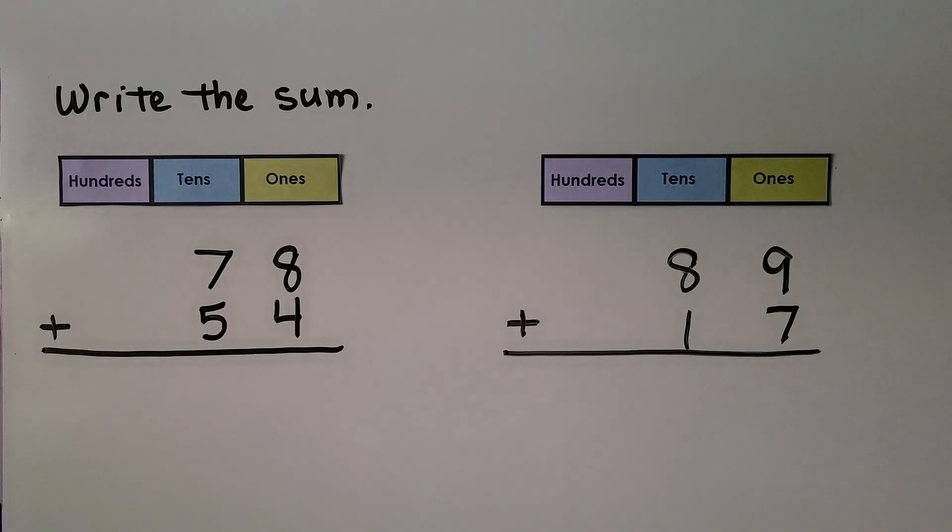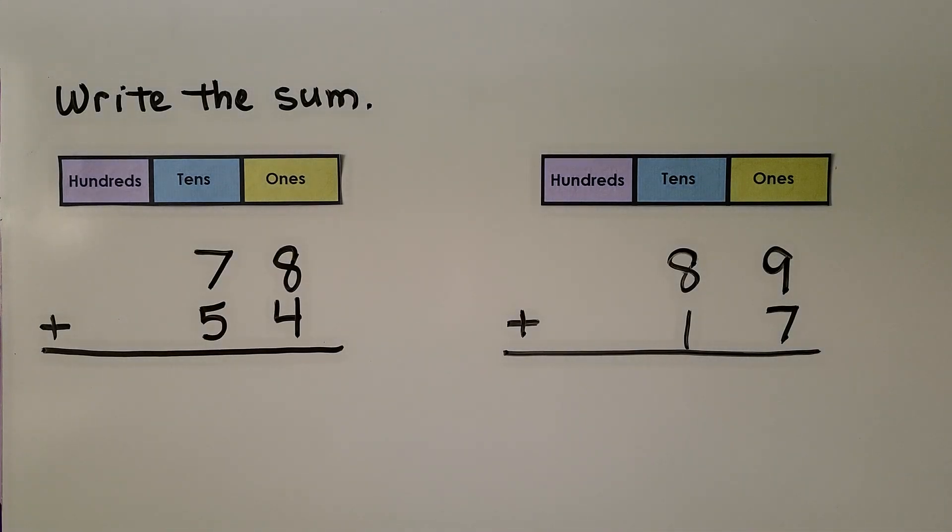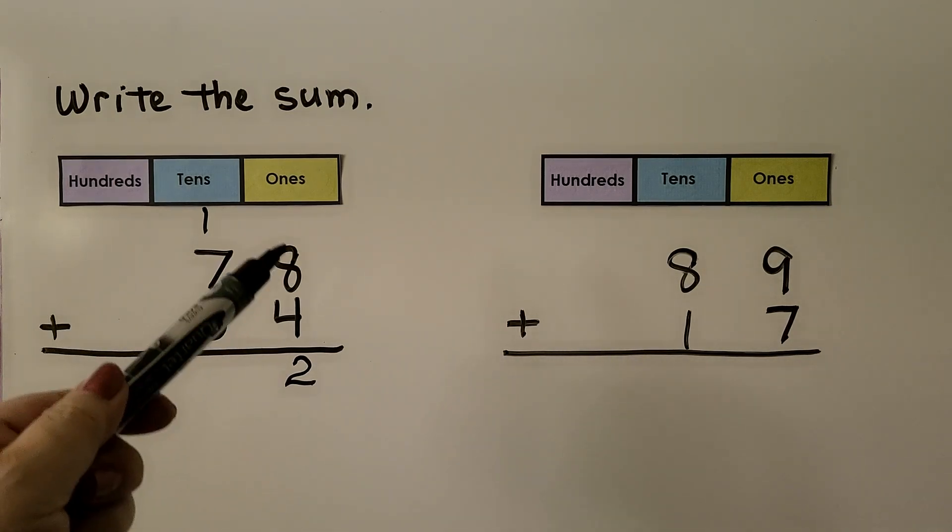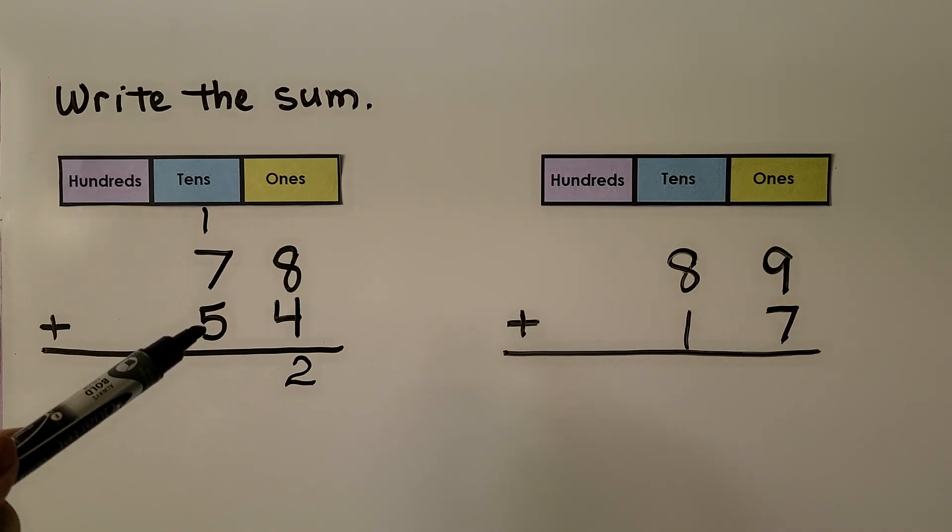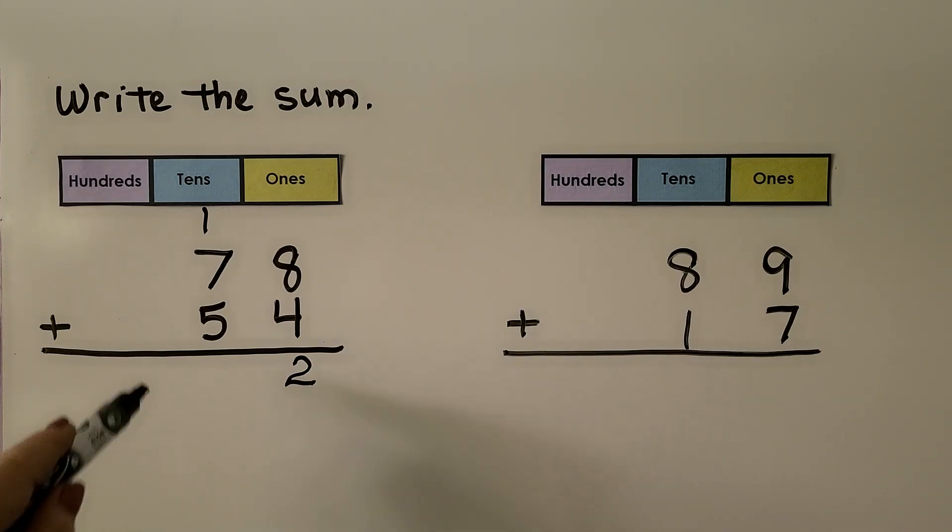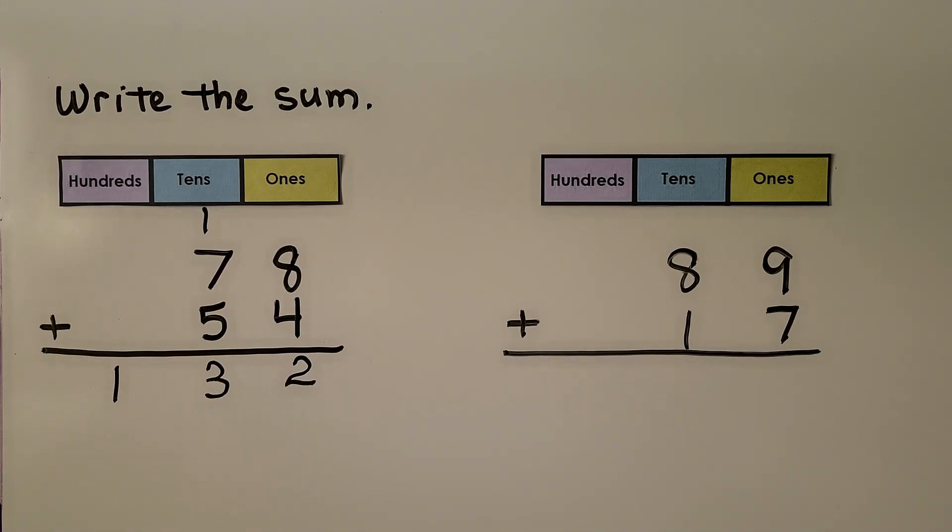It's telling us to write the sum, so we need to add these numbers. We have 78 + 54. We start by adding the ones: 8 + 4 = 12. Twelve is one ten, two ones. We regroup the ten and write the two in the ones column. Now we add the tens: 7 + 5 = 12, plus one more is 13. That means we have one hundred, three tens, two ones. Here's the thirteen tens - see it? It became one hundred and three tens.